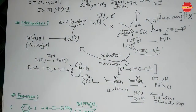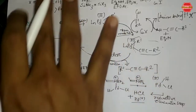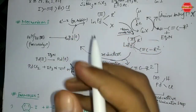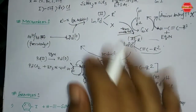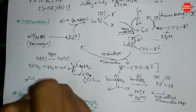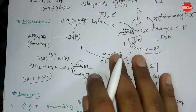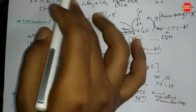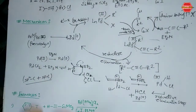The reason terminal alkynes are used as the coupling partner is because earlier reactions formed sp2–sp2 carbon bonds. In the Sonogashira cross coupling, we are able to form sp2–sp carbon bonds, which is why this reaction is specifically needed. In examinations, you can easily identify this reaction by looking for an alkyne coupling partner and the copper(I) co-catalyst.